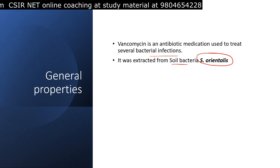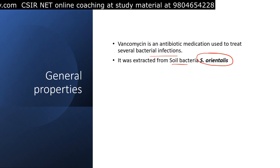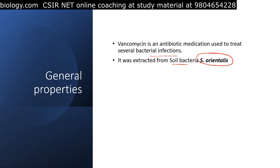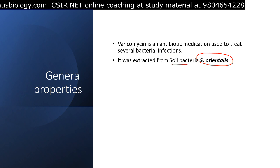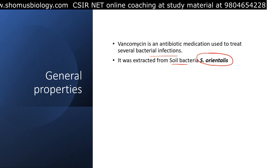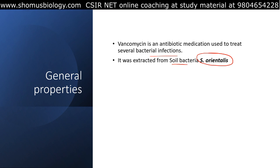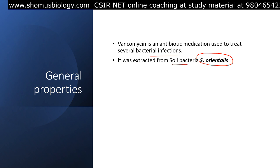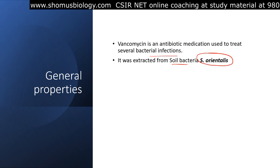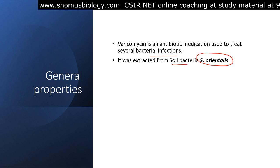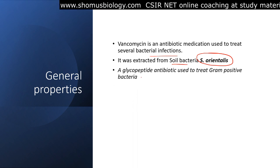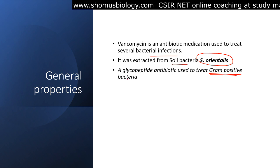Beta-lactam antibiotic is the class of antibiotic that interferes with the peptidoglycan synthesis of the bacterial cell wall. Vancomycin is one kind of beta-lactam antibiotic. Other examples include penicillin and cephalosporins. When penicillin is resistant, we use cephalosporin; once cephalosporins are resistant, we use vancomycin or fifth-generation cephalosporin. Vancomycin is a glycopeptide antibiotic used to treat gram-positive bacteria.